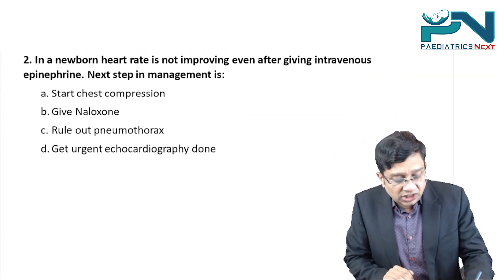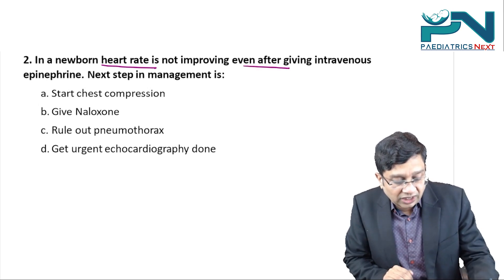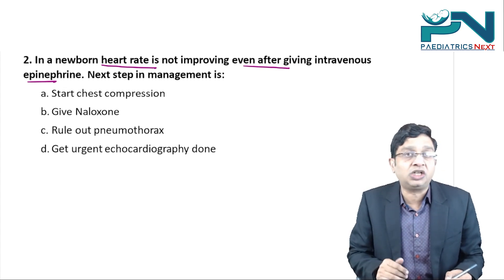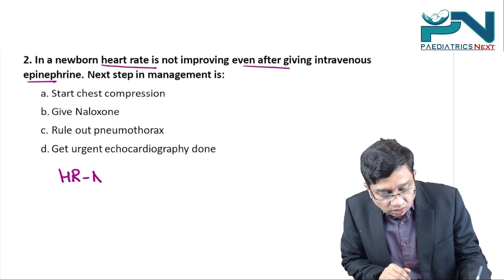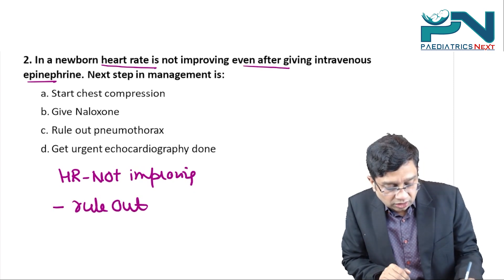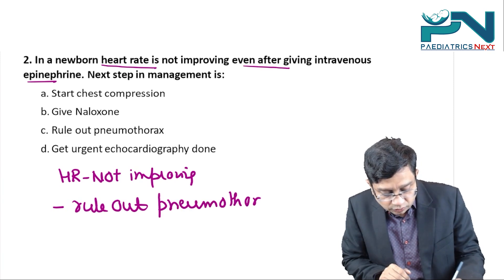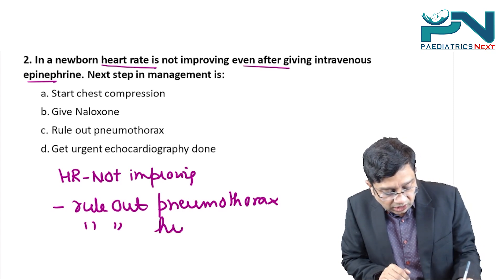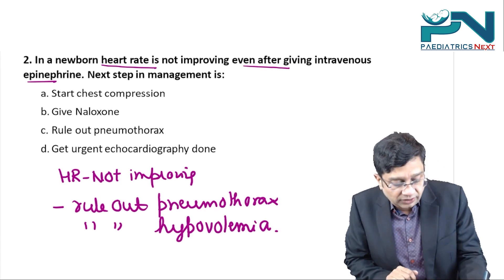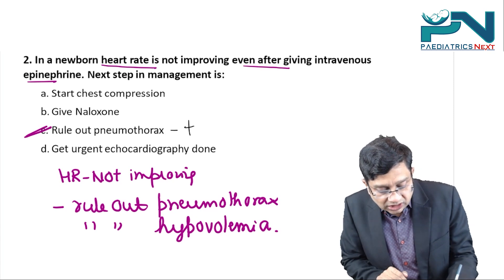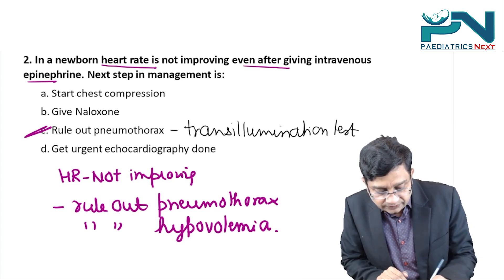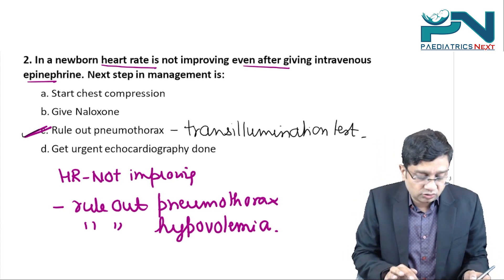Question number two: in a newborn, heart rate is not improving after giving IV epinephrine. Epinephrine can be given by three routes — intravenous, intraosseous, and intratracheal — and still the heart rate is not improving. You need to rule out two things: pneumothorax or hypovolemia. Pneumothorax can be ruled out by the transillumination test. So after epinephrine, rule out pneumothorax and hypovolemia.